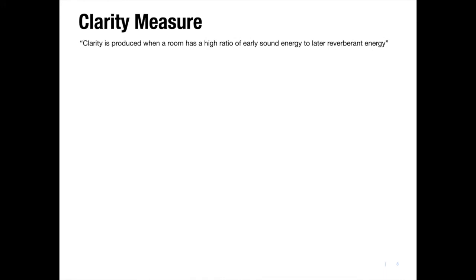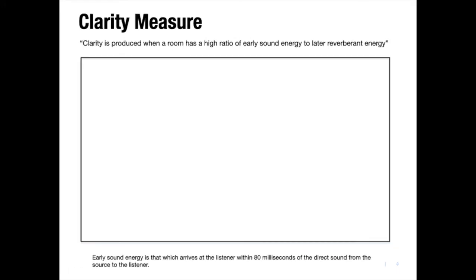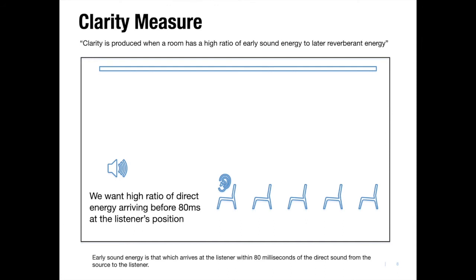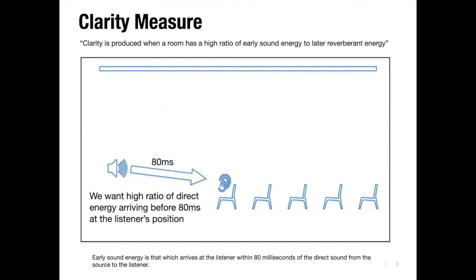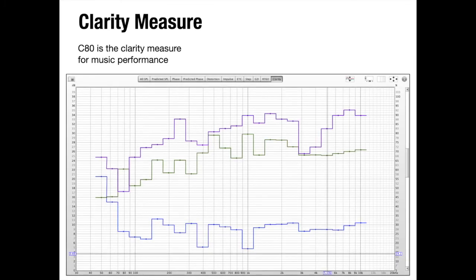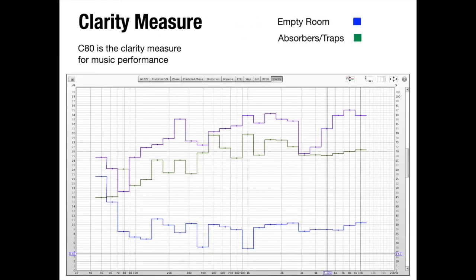So now let's look at clarity or C80 for the room. Music clarity or C80 is produced when a room has a high ratio of early sound energy to later reverberant energy. What I want for my room is to have a high percentage of the direct energy in relation to the indirect arriving at the mix position. The calculation divides the timing of the energy measured at 80 milliseconds. In this chart, we've plotted the C80 for the empty, trapped, and fully treated room. Higher on the chart is better clarity.